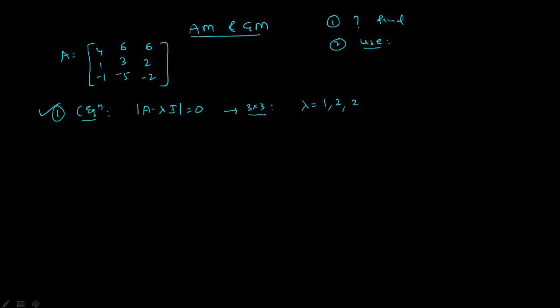Finding the eigenvector is important for AM and GM. To find the eigenvector for lambda equal to 1, we take the matrix (A minus lambda I) with lambda equal to 1, and set it equal to zero. After substituting, the matrix becomes: first row [3, 1, -1], second row [6, 2, -5], third row [6, 2, -3].